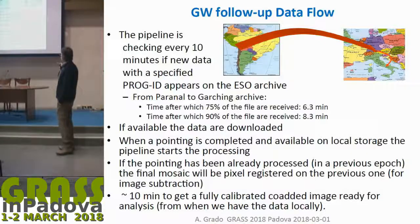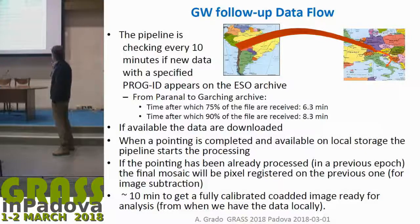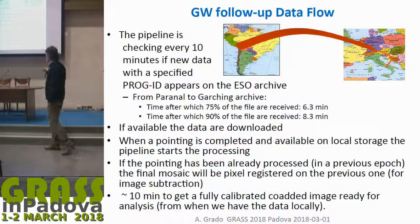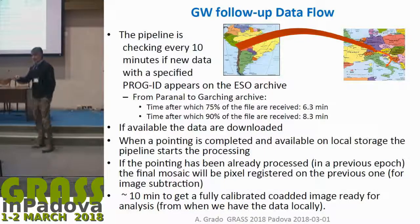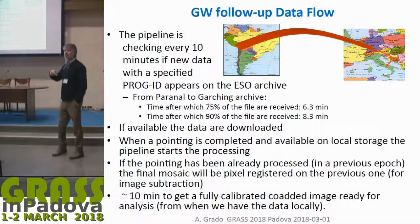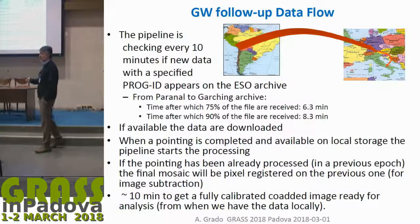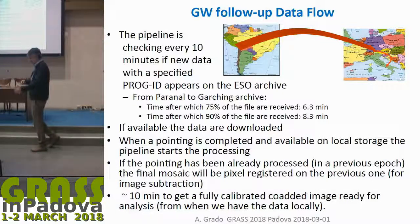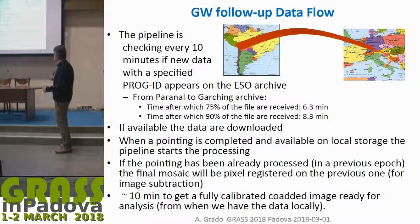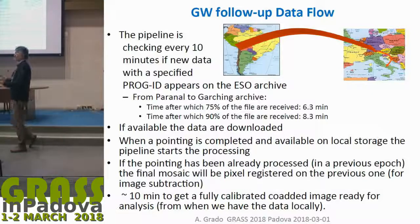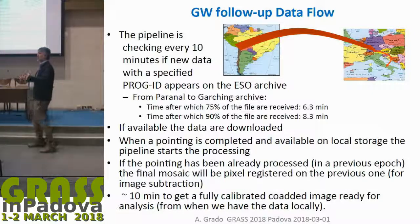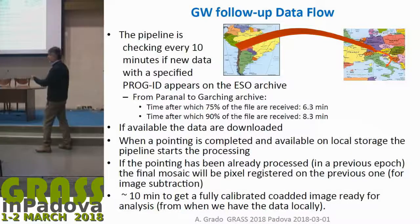As soon as observations are completed, data are mirrored to Garching and ESO headquarters, then transferred to Naples where the VST data center is located. We process the data — removing instrumental signatures, calibrating photometrically and astrometrically — and within 10 minutes we have these large, gigabyte-sized images ready for further analysis and transient searching.